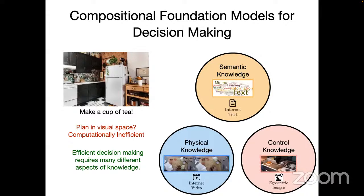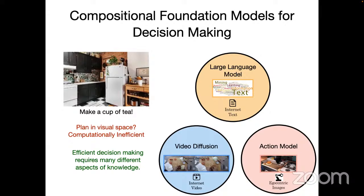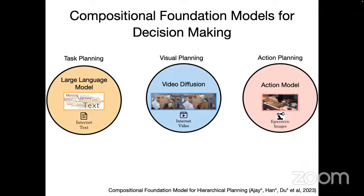We use a large language model as a proxy for internet text, pre-train a video diffusion model on internet videos, and pre-train the top layers of our action model on egocentric images. We refer to these as task planning, visual planning, and action planning respectively. This is our recent work using three different foundation models together for decision-making.